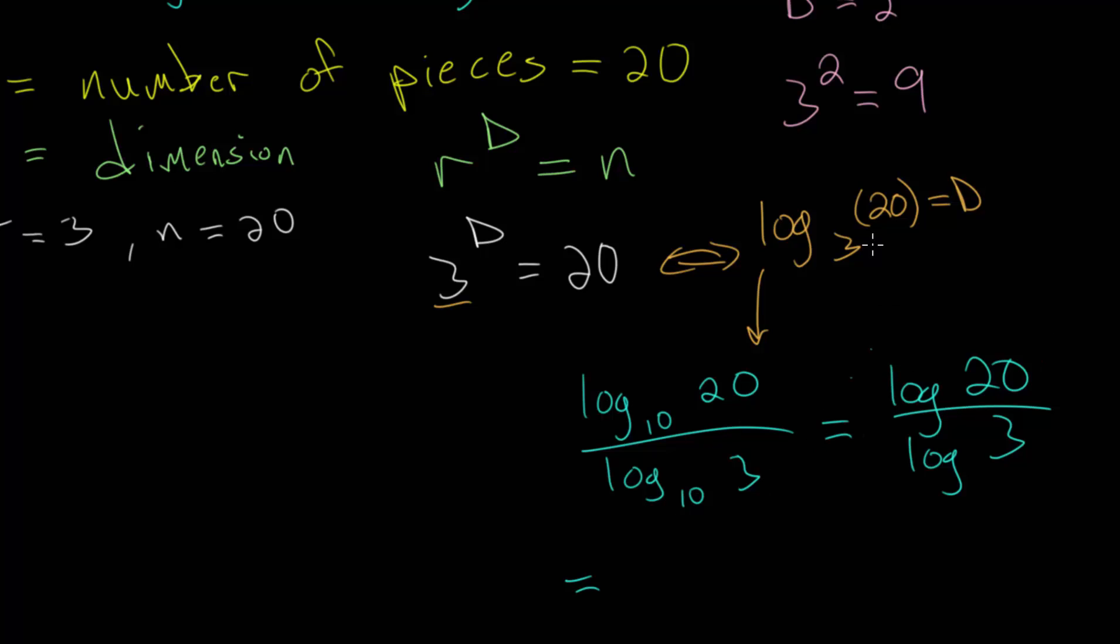Or we can also use base e. We can write log base e of that original input divided by log base e of the original base. But logarithms with base e, that's just the natural log, which we write as ln. So we can do this as ln of 20, the natural log of 20 divided by the natural log of 3.